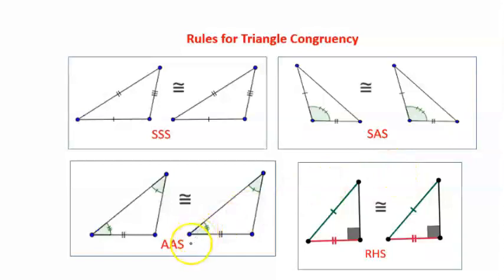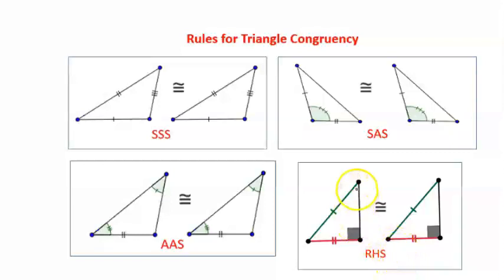The third case is angle-angle-side, where we need to prove two corresponding angles and the side between them are equal. And the last case, the fourth case, is right-angle-hypotenuse-side. We need to prove the hypotenuse and one corresponding side of a right-angle triangle are equal — so it must be a right-angle triangle.